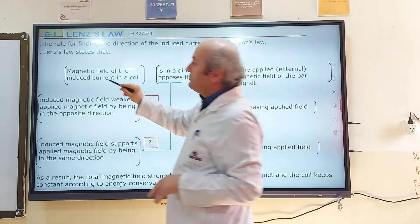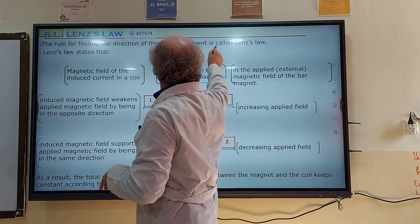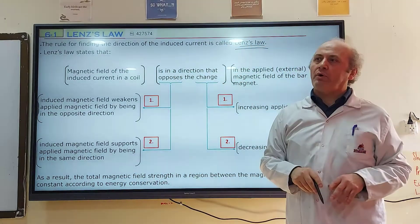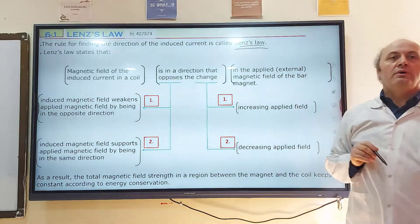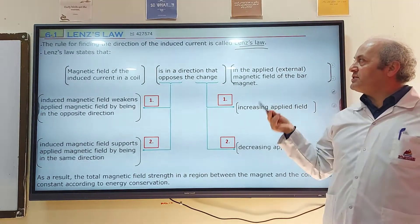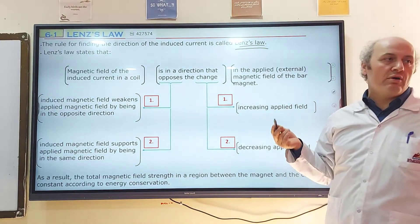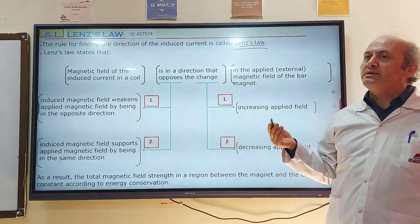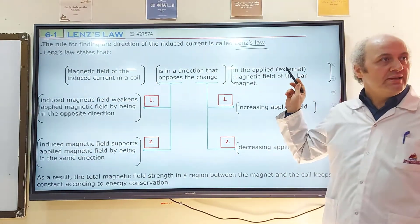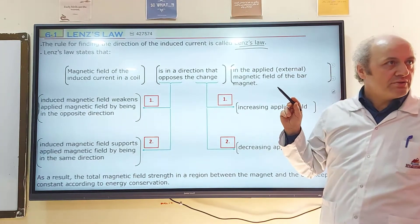The rule for finding the direction of the induced current is called Lenz's Law. This definition must be known. So the options are: A, Faraday's law; B, Lenz's law; C, Harry's law. Lenz's law is used for finding the direction of the induced current.